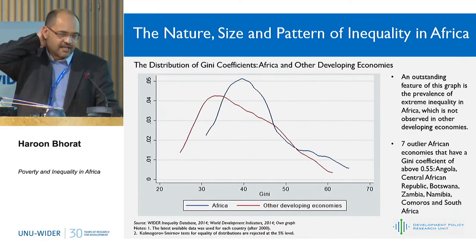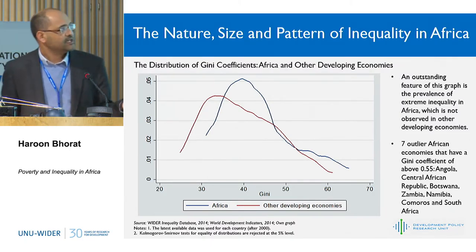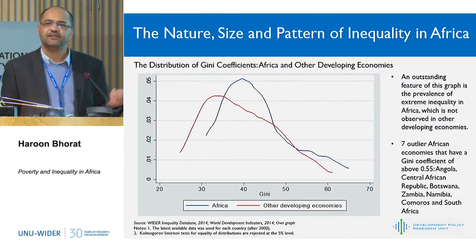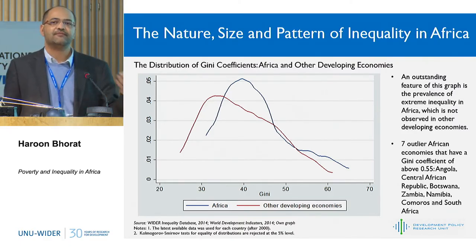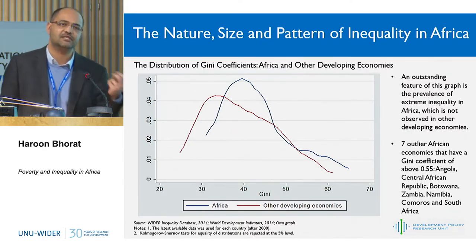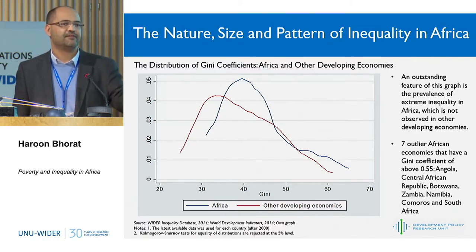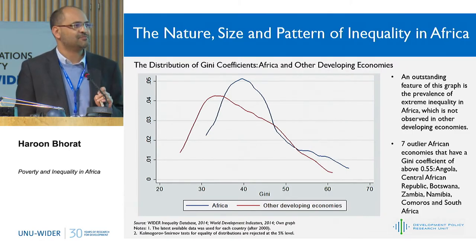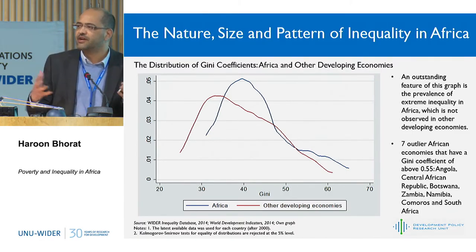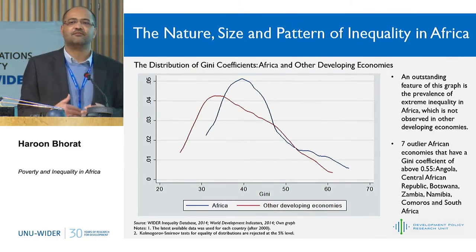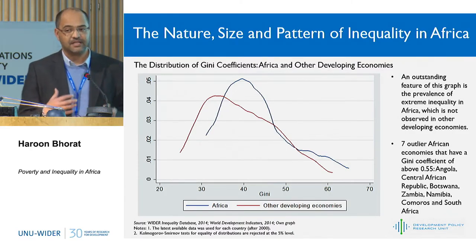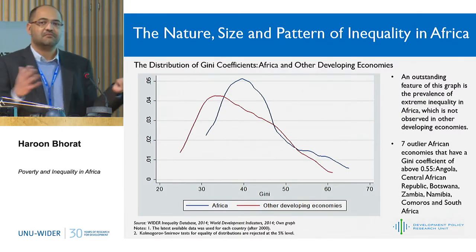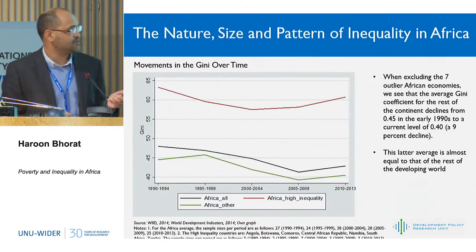The result that surprised us most is that there are seven outlier African countries — Angola, Central African Republic, and a host of southern and eastern African economies — which drive this result. When you remove those seven outlier African economies, there's no significant difference between the mean African Gini and other developing countries. This is a huge economic history project: some would argue that the economic history of colonialism and conquest in southern Africa is very different to West Africa, and that may explain this difference. Without these seven outlier economies, inequality levels between developing country regions and Africa disappears.